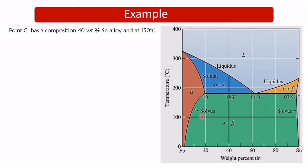The most important thing when given a phase diagram is to understand its description. Here it says weight percent tin, so 20 on the axis represents 20 weight percent tin, meaning 80 weight percent lead. 40 weight percent tin means 60 weight percent lead. The given condition is 40 weight percent tin alloy at 150 degrees Celsius.